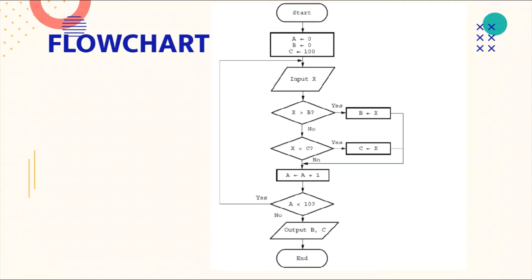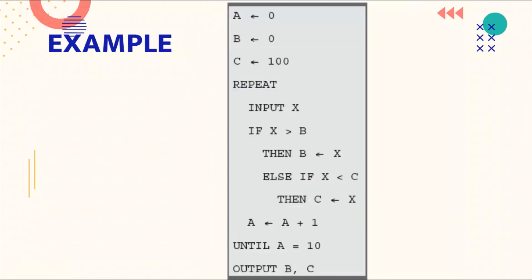Then connect an arrow to a parallelogram stating 'Input x'. Since we have a greater-than comparison and decision-making, you use a diamond symbol. The first diamond symbol states: 'x > b'.